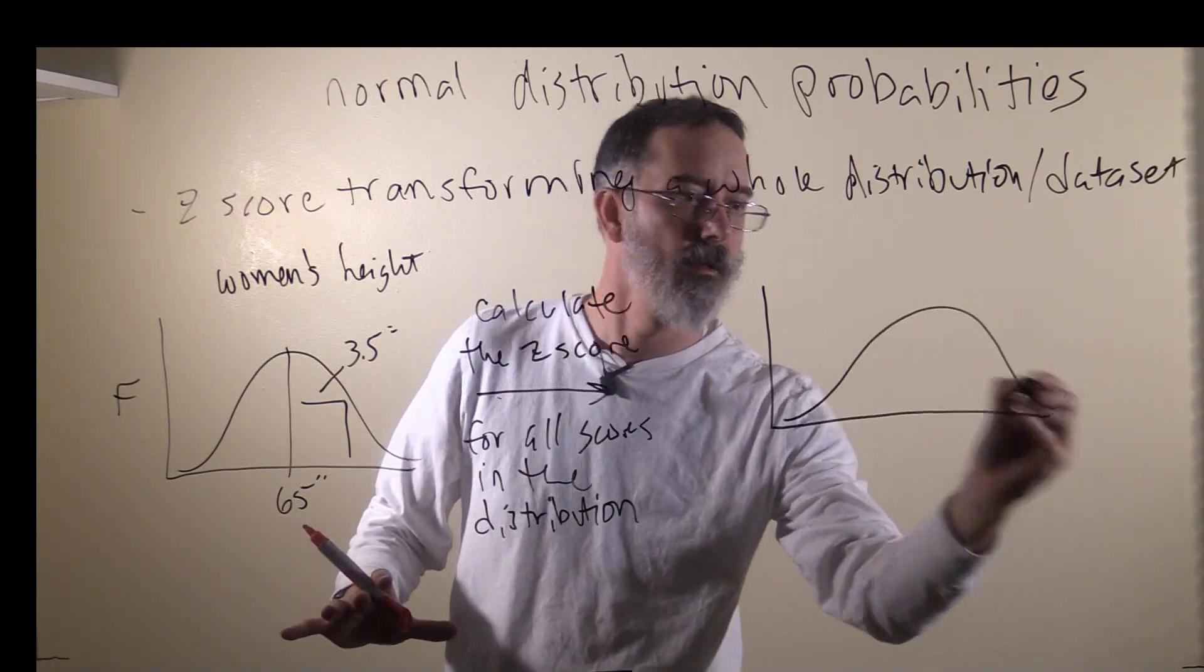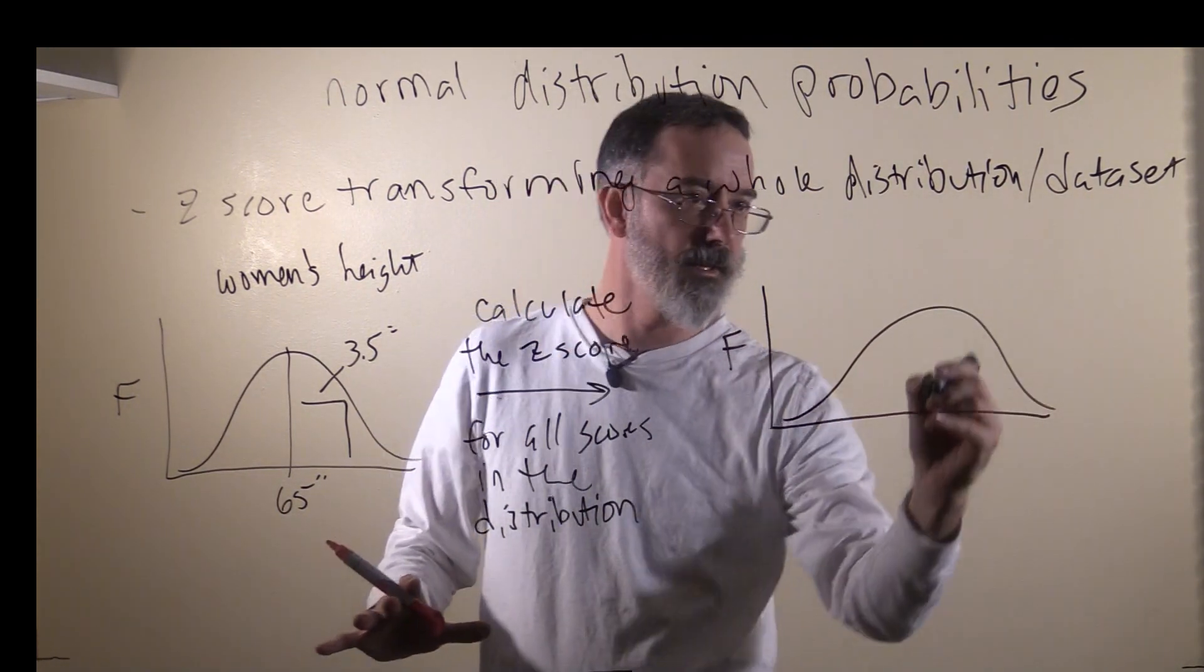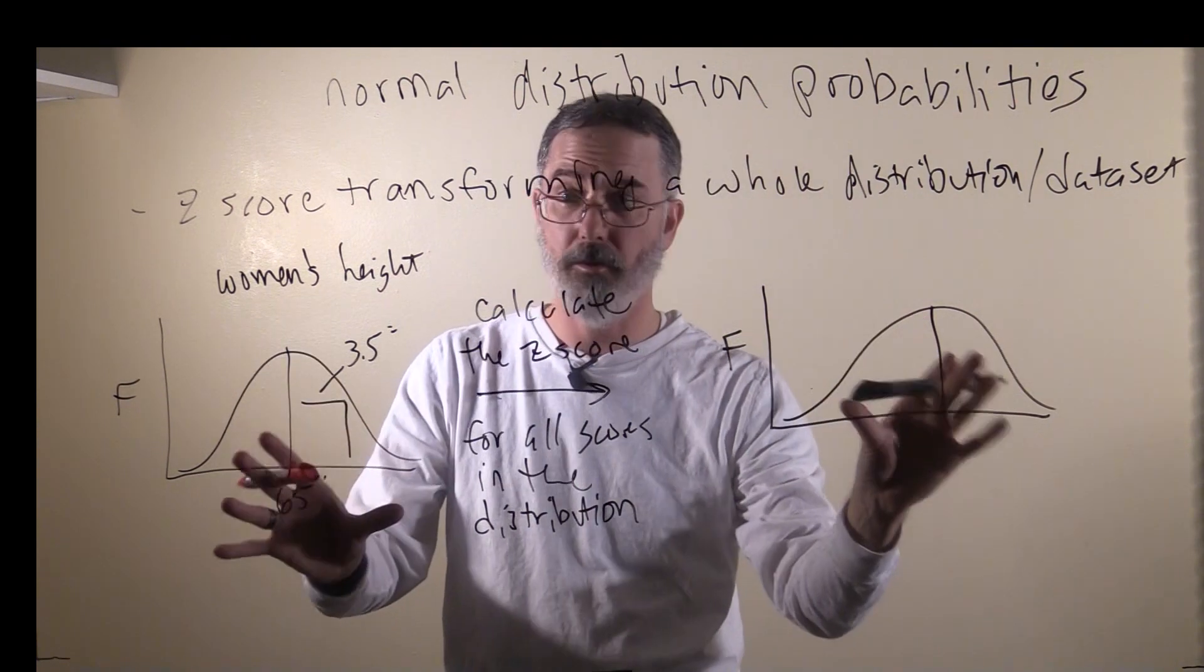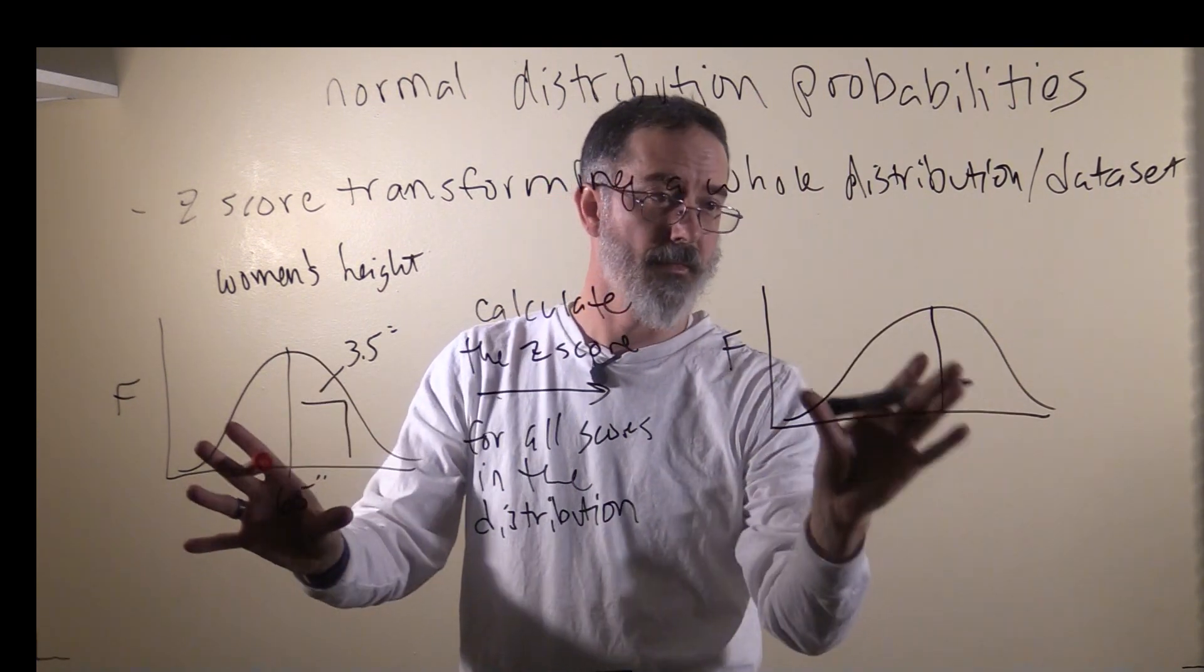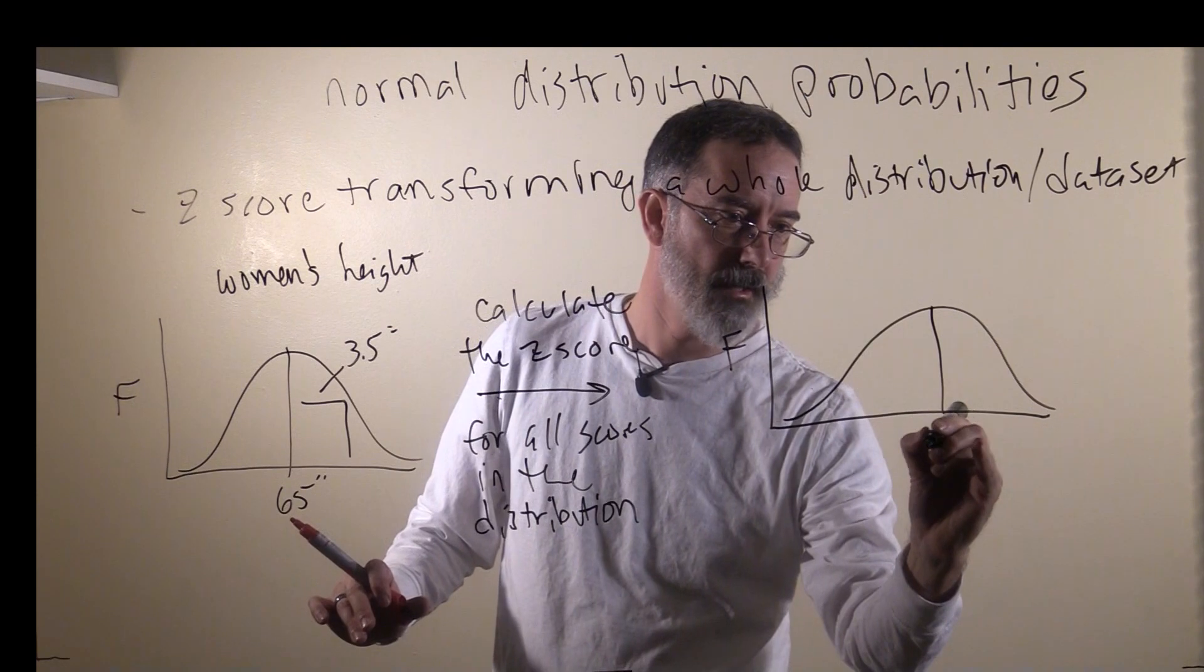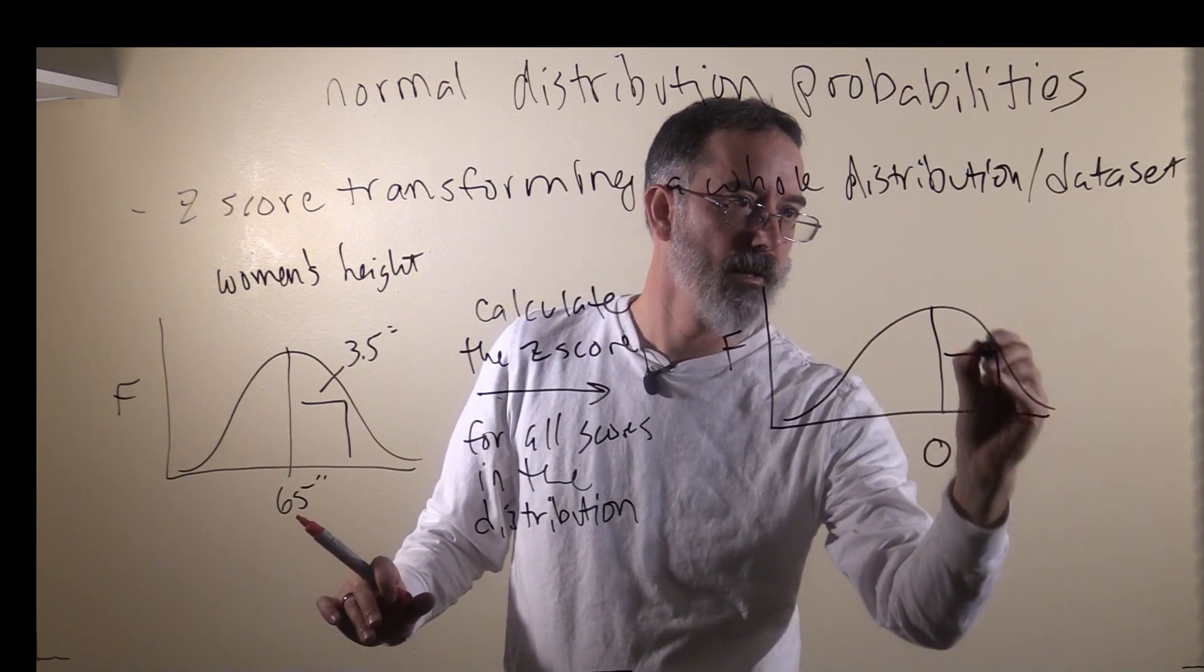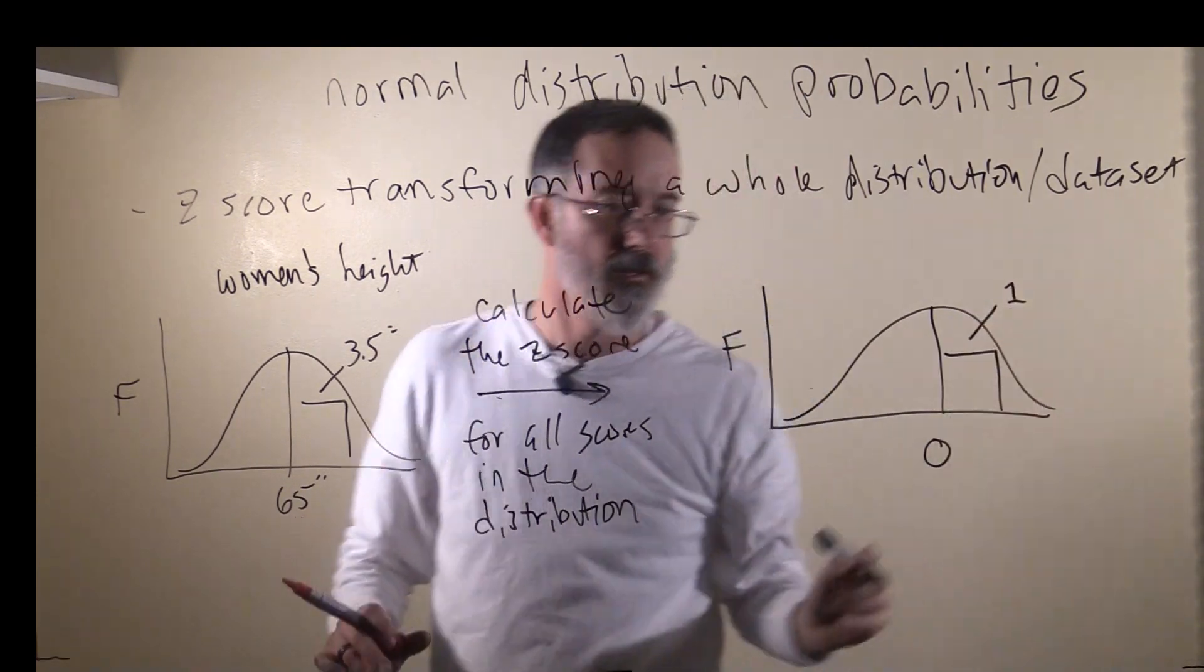This is what we'll end up with. We'll have a frequency distribution. It's still going to be a normal distribution. This one is normal. This will have the exact same shape as the original one. It's going to have a mean of zero and a standard deviation of one.